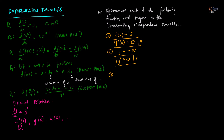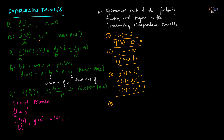Applying the power rule in example number three: given g of x equals x cubed, the derivative g prime of x is found by bringing down the exponent 3, copying x, and subtracting one from the exponent. So g prime of x equals 3x squared. Similarly, for h of x equals x to the fifth, h prime of x equals 5x to the fourth.